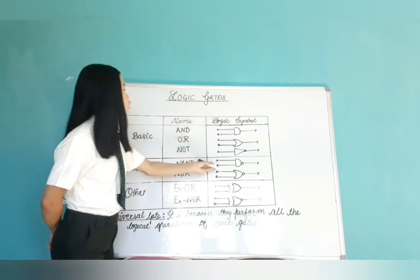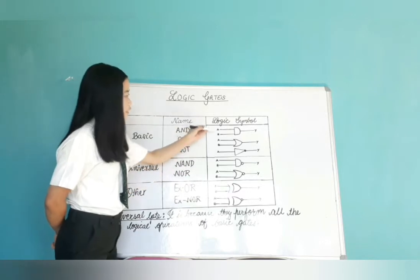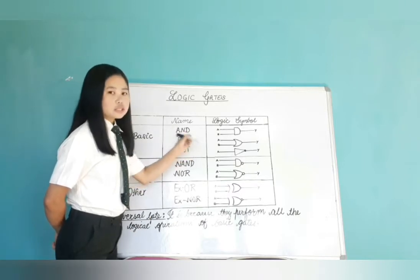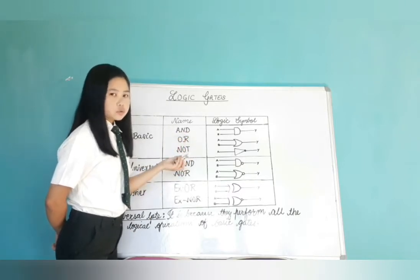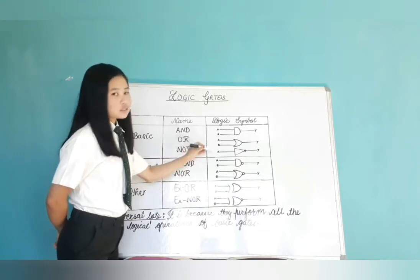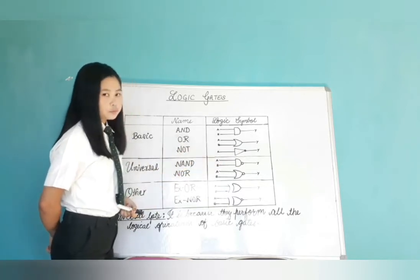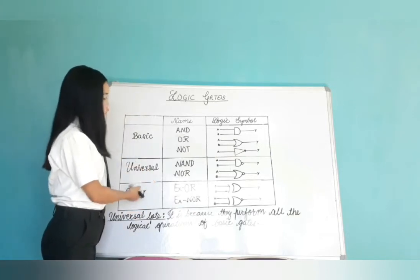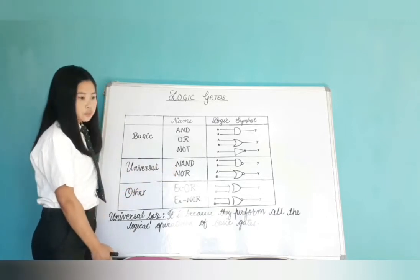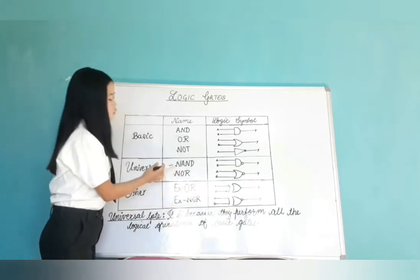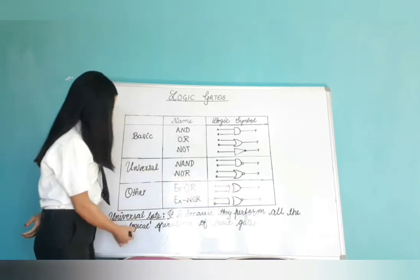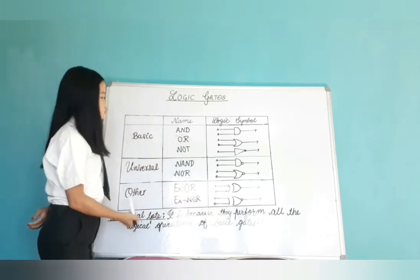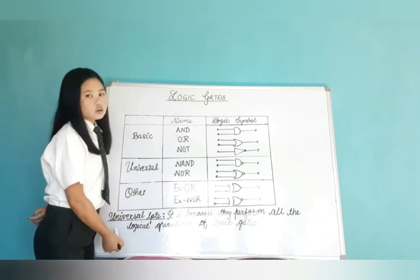Here is the logical symbol of all logic gates. A and B are inputs, Y is output. Every logic gate has two or more than two inputs except for NOT. NOT has only one input and one output. NAND and NOR are called universal gates because they perform all the logical operations of basic gates — that is AND, OR, and NOT. This is why NAND and NOR are called universal gates.